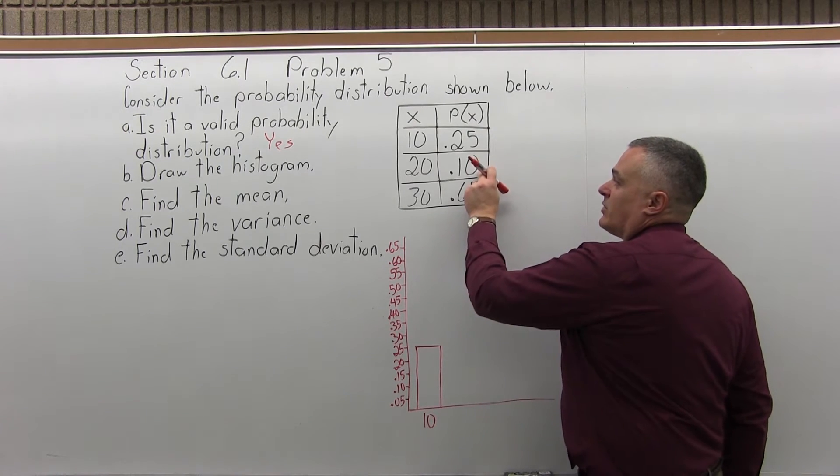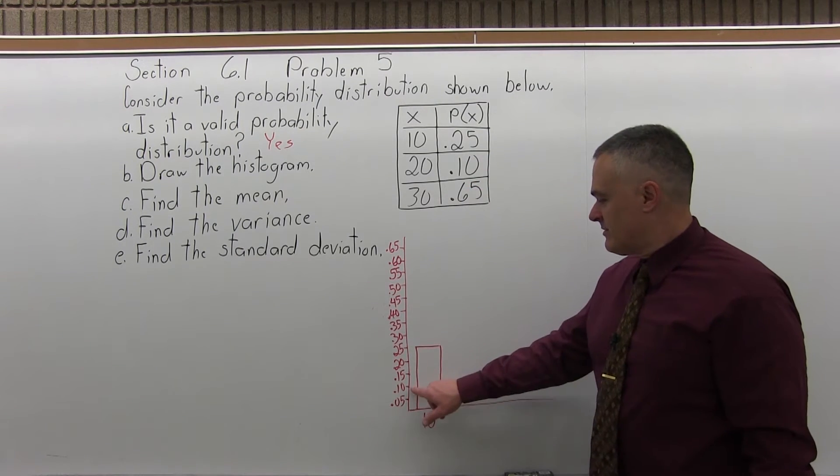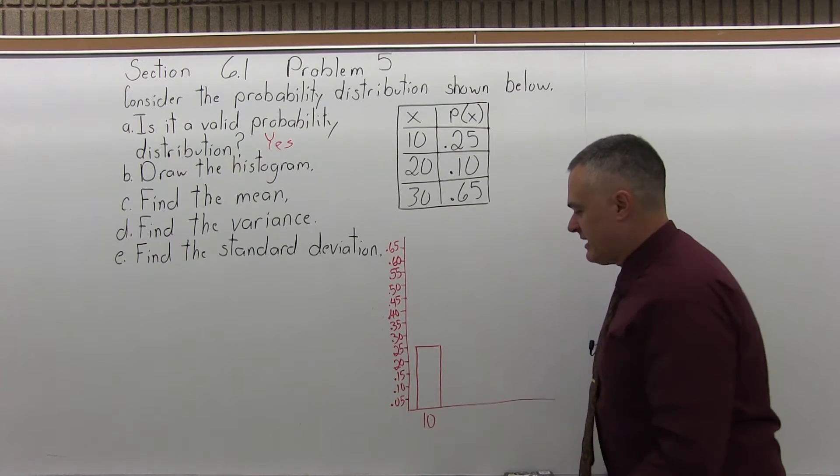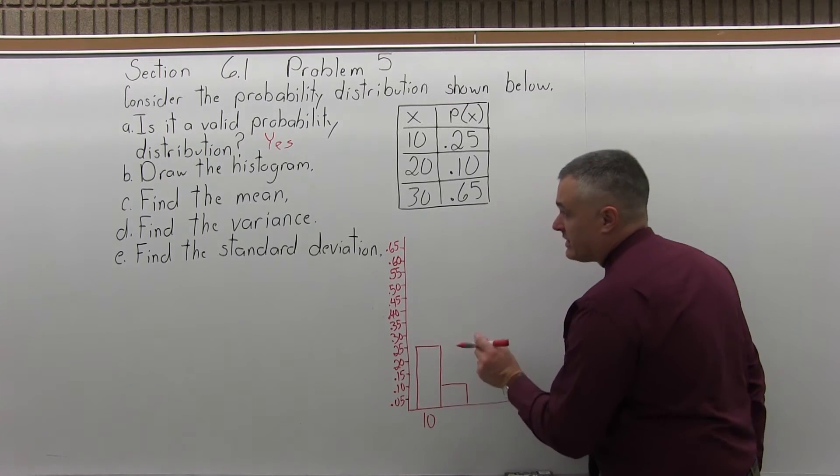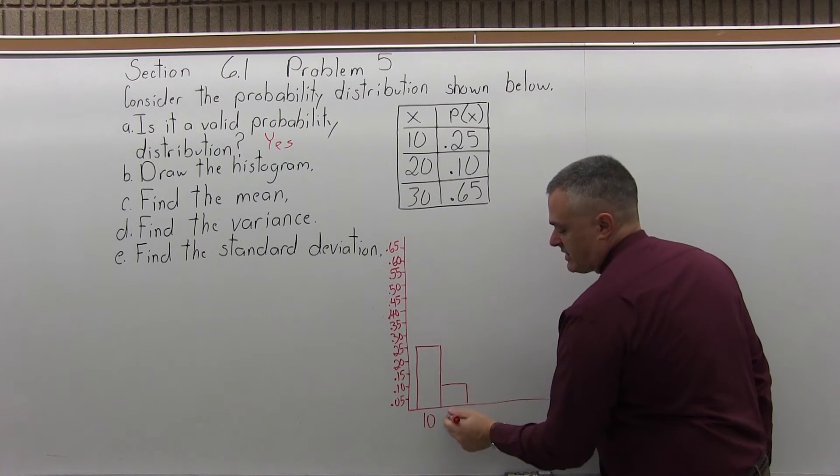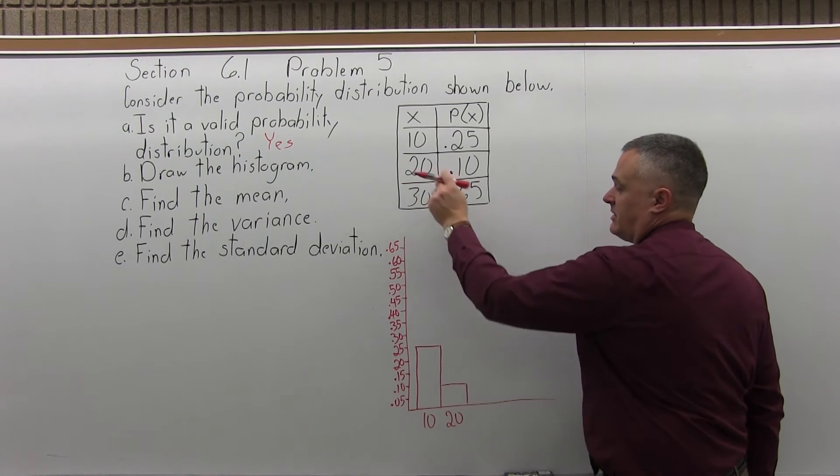Now the next bar will go up to a height of 0.10, which is that height. Again, the bars will be vertical. They'll touch. The number under the center of that second bar will be 20. That's the value from the first column.